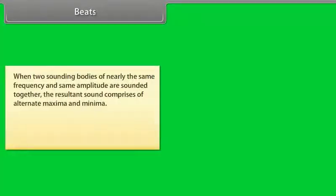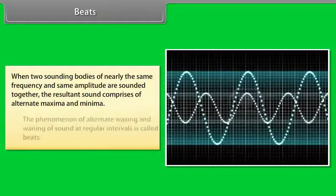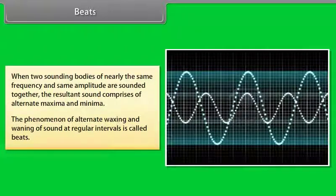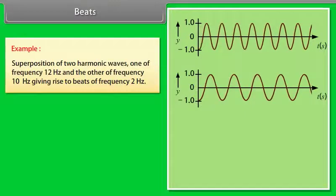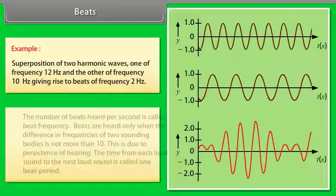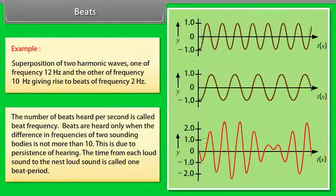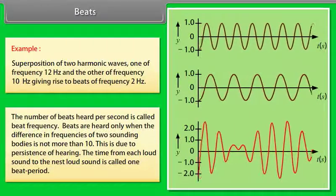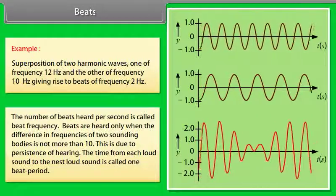Beats: When two sounding bodies of nearly the same frequency and same amplitude are sounded together, the resultant sound comprises alternate maxima and minima. The phenomenon of alternate waxing and waning of sound at regular intervals is called beats. For example, a wave of frequency 12 Hz and one of frequency 10 Hz superimpose to give beats of frequency 2 Hz. The number of beats heard per second is called beat frequency. Beats are heard only when the difference in frequencies of the two sounding bodies is not more than 10, due to persistence of hearing. The time from each loud sound to the next is called one beat period.